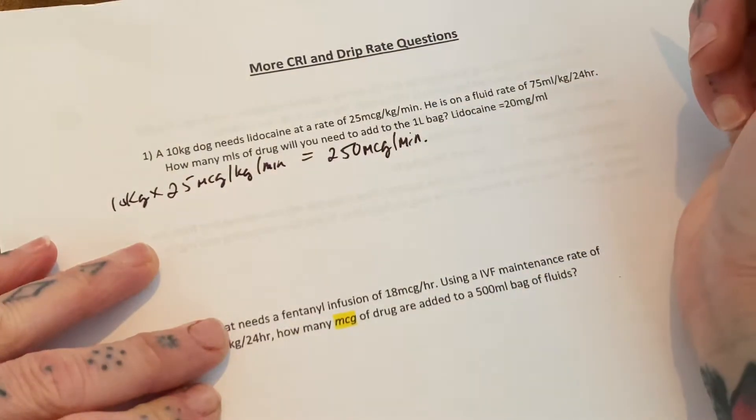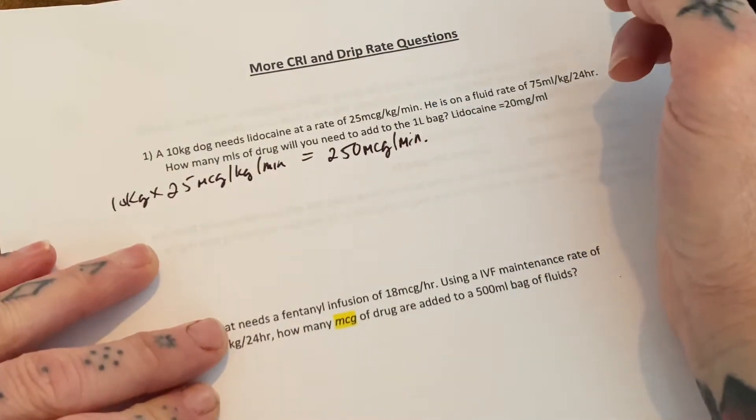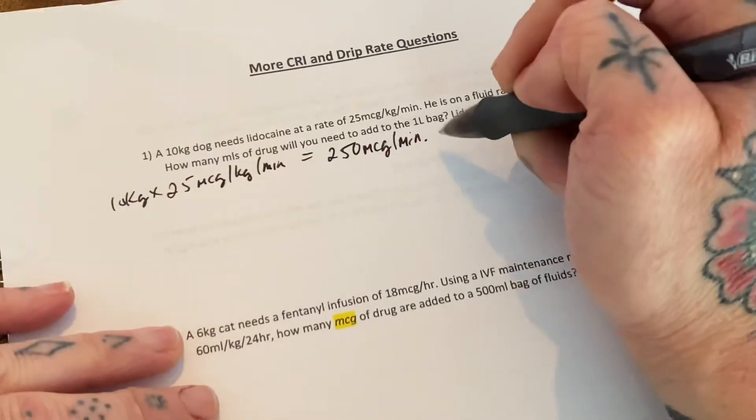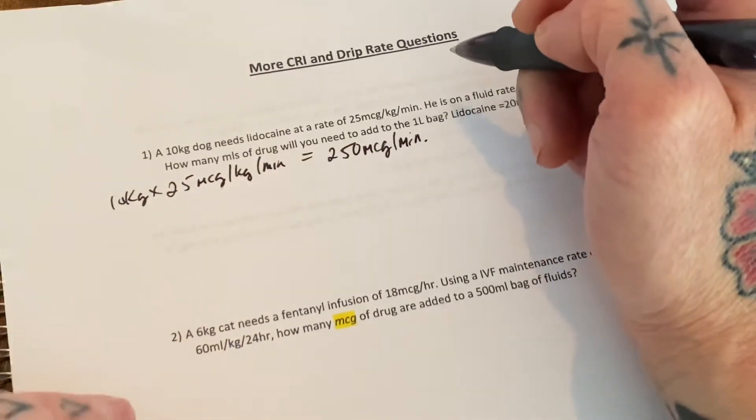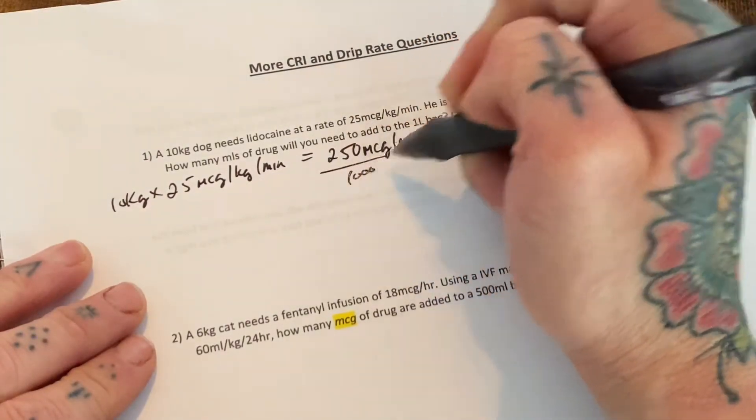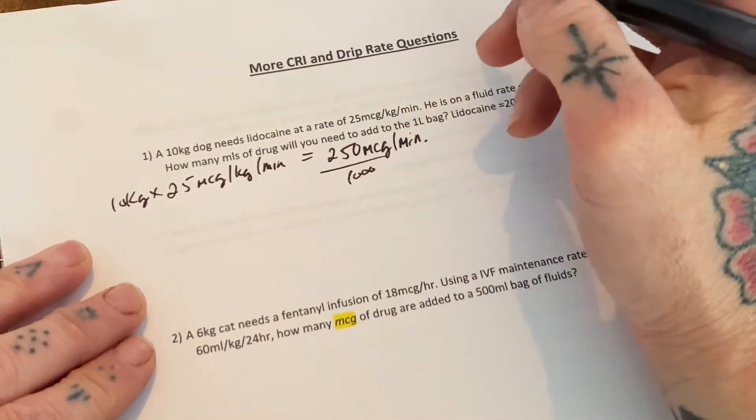So from here you can either turn your micrograms into milligrams or minutes into hours, but do it one at a time and you'll make less mistakes. So there are a thousand micrograms per milligram. So we're going to divide this by a thousand because there's a thousand mics in one milligram.